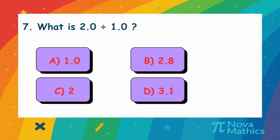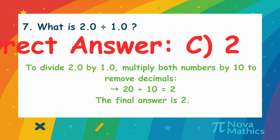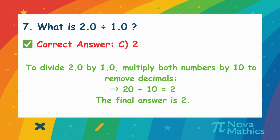6. What is 2.0 divided by 1.0? We want to divide 2.0 by 1.0. Multiply both by 10 to make them whole numbers. 20 divided by 10 equals 2.